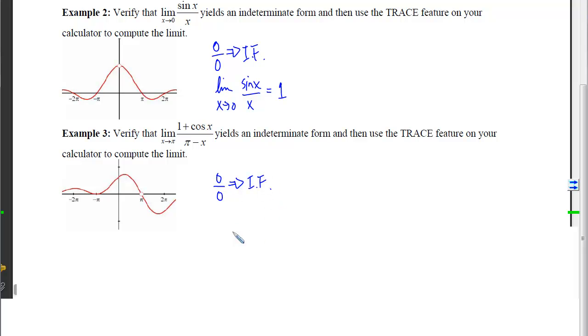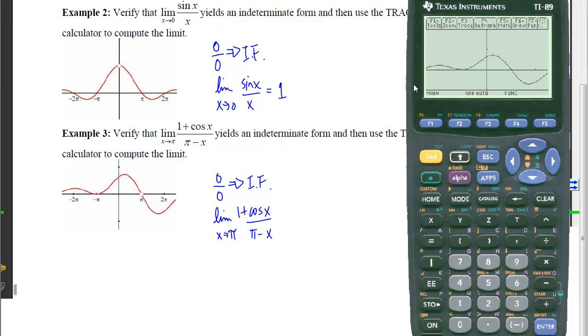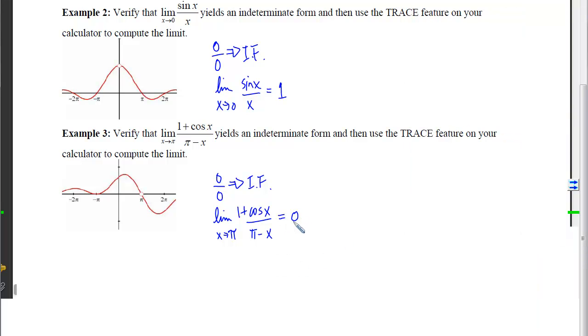To compute the limit now, I'm going to graph it and then trace really close to pi. Here on my calculator, you can see I've graphed the function. If I trace to pi, we verify a y-coordinate does not exist because we're at a hole. If I trace to something really close to pi, we get a y-coordinate that is really close to 0. So we can see that limit is going to be 0.